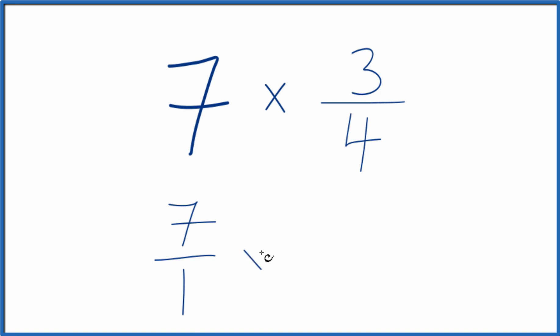But now we multiply this fraction times 3 fourths, and because we're multiplying fractions, we multiply the numerators, then the denominators.